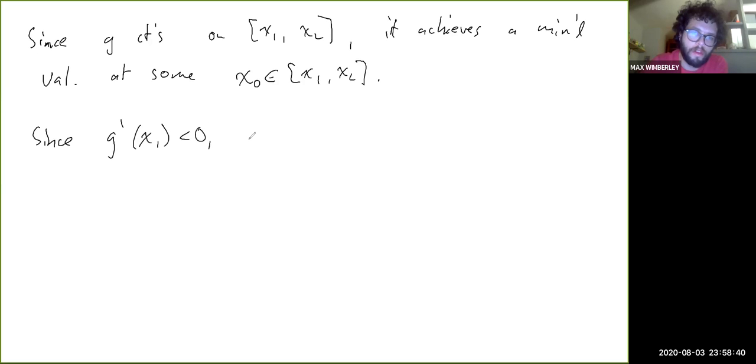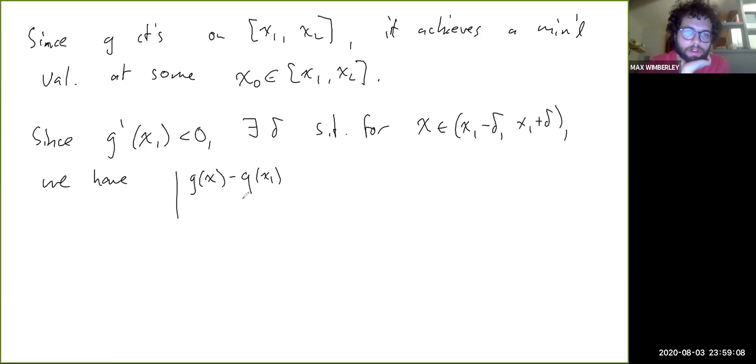Since g'(x₁) is negative, there exists a delta such that for x in (x₁ - δ, x₁ + δ), we have the divided difference (g(x) - g(x₁))/(x - x₁) minus g'(x₁) is less than absolute value of g'(x₁) over 2. This is less than zero.